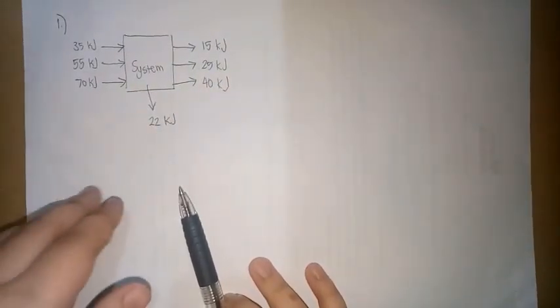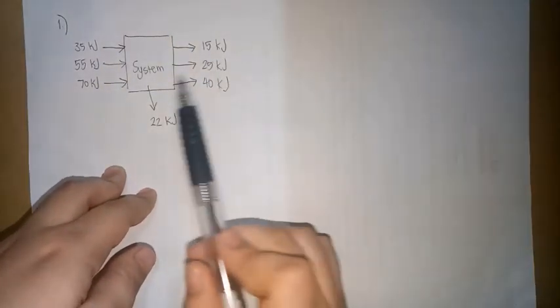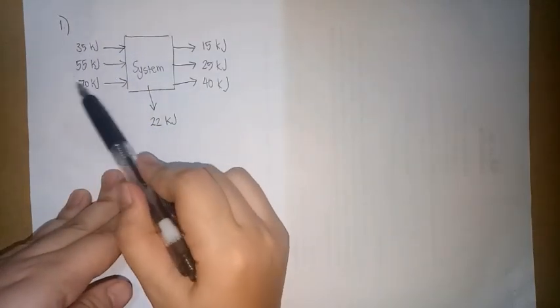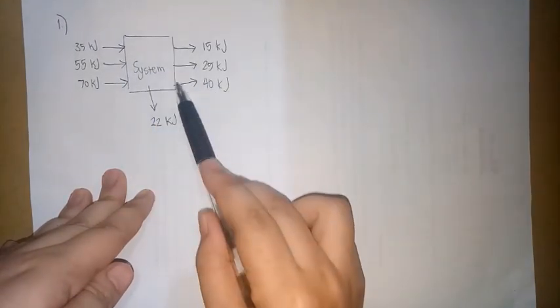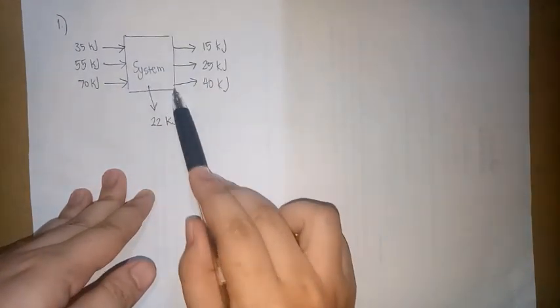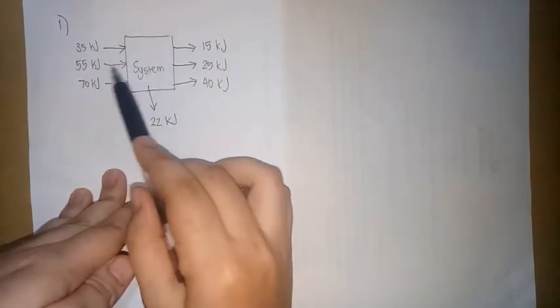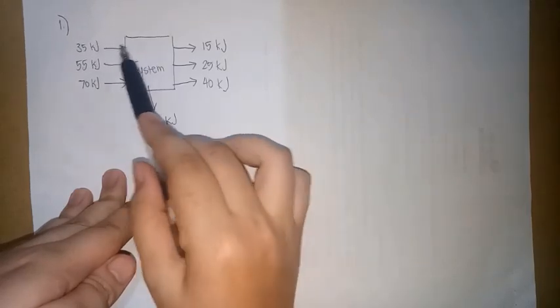In problem number one, so ito yung ating diagram. Ano ba yung sabi dun sa problem number one? These three energy quantities are received by a system: 35 kilojoules, 55 kilojoules, and 70 kilojoules. So, kung i-sketch natin yung system, kahit simple yung box lang, pangalanan lang natin yung system. So yung entering, papasok dun sa system. Kaya yung arrow niya, yung arrowhead, is papunta towards the box, papunta dun sa system.